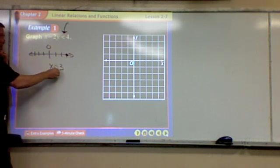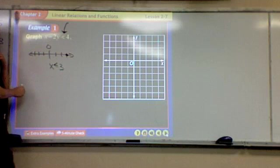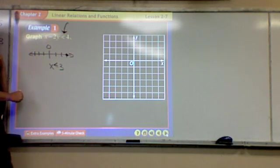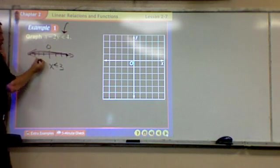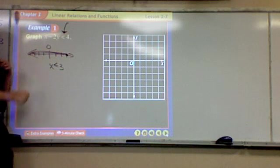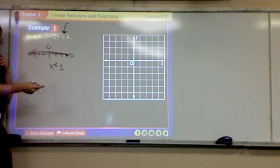Well, if I change that to x is less than or equal to 3, then you'll put the dot on the 3 and go to the left. To the left, which means there's a boundary and there's shading. Do you see that? There's a boundary and there's shading.